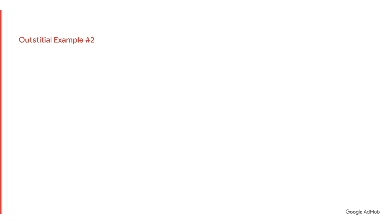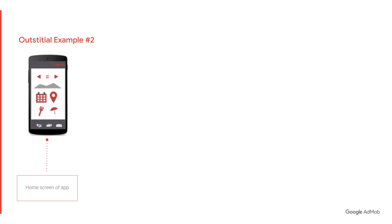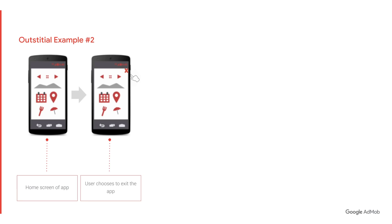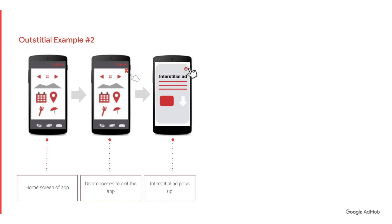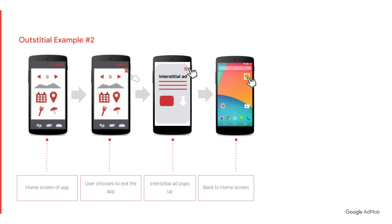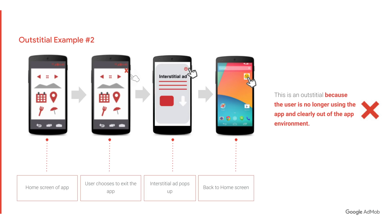Example two: starting from the app screen, assuming the user wants to leave the app, the user clicks the exit app button. An interstitial ad pops up and the user closes the ad. Thereafter, the user is brought back to the homepage of their mobile. This is an outstitial because the user is no longer using the app and is clearly out of the app environment.